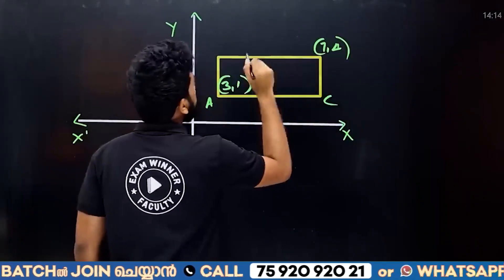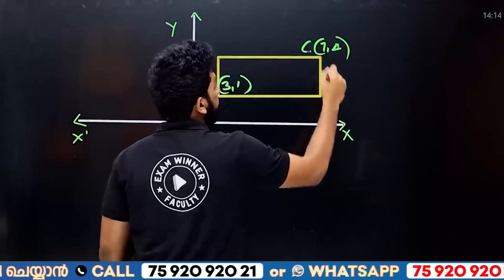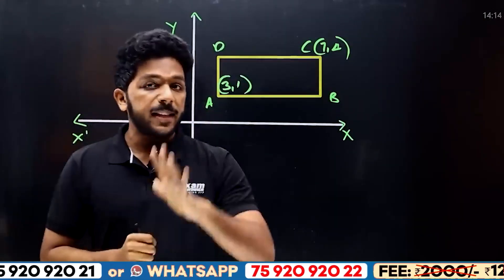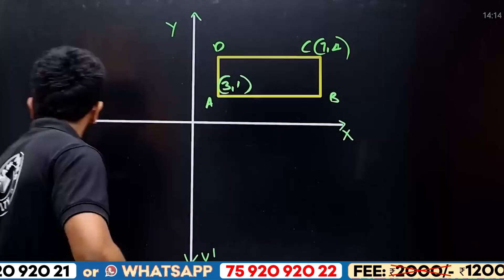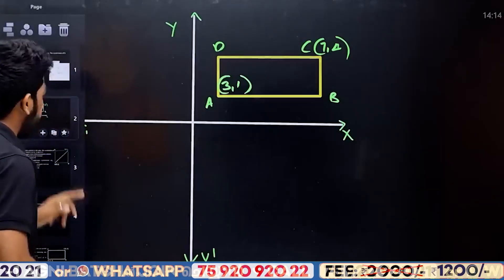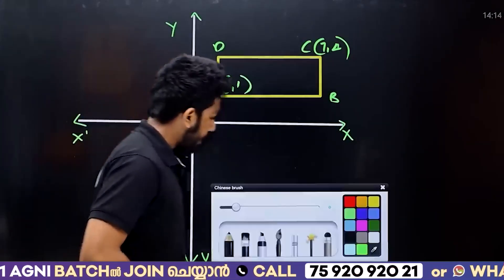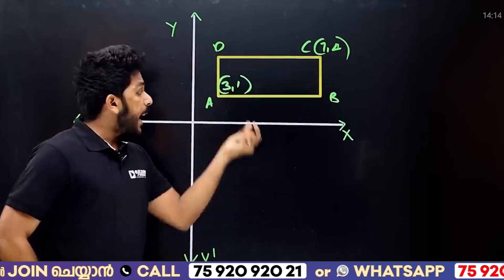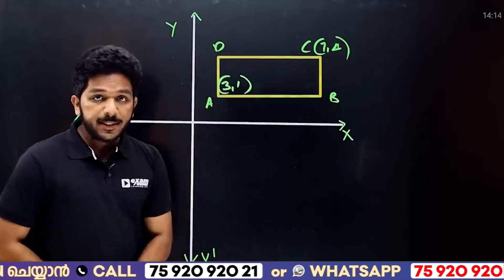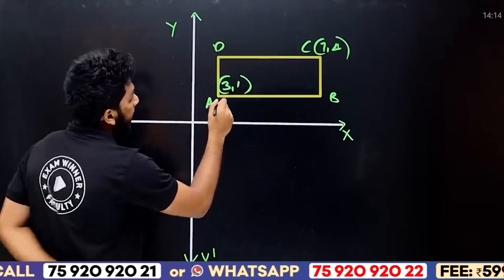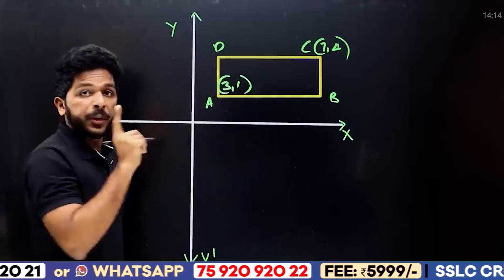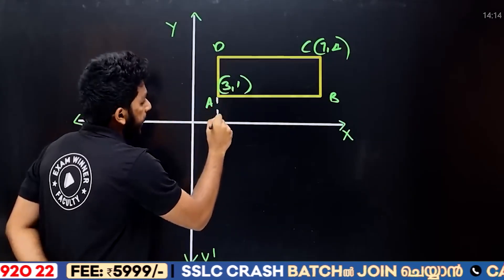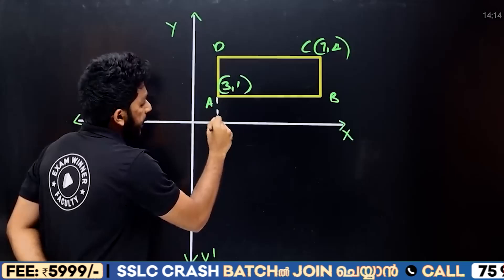A and C are the diagonal vertices. You need to find B and D. The logic is simple: for the x-coordinate, the two numbers given are x values. So x is 3. The x-axis value is 3.